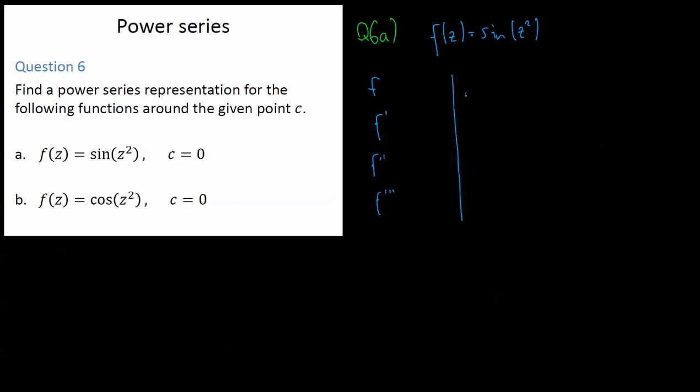And then we can substitute in the point we're trying to find it at: f dash of zero, f double dash of zero, f triple dash of zero. And then we want to find a general result for the nth derivative evaluated as zero, and then we can write that in our power series.